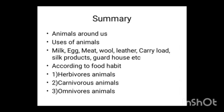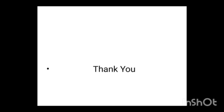Now let us have a summary for today's class. Animals around us, uses of animals. According to food habit, we can divide animals into three: herbivores animals, carnivores animals, and omnivores animals. That's all for today's class.